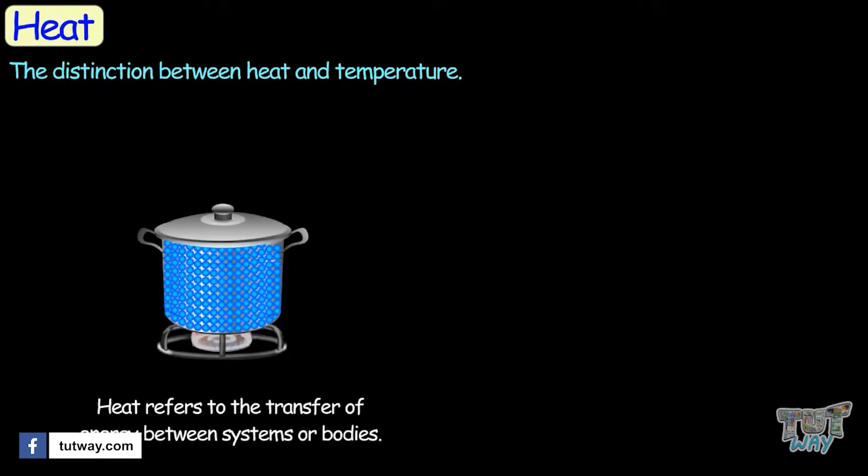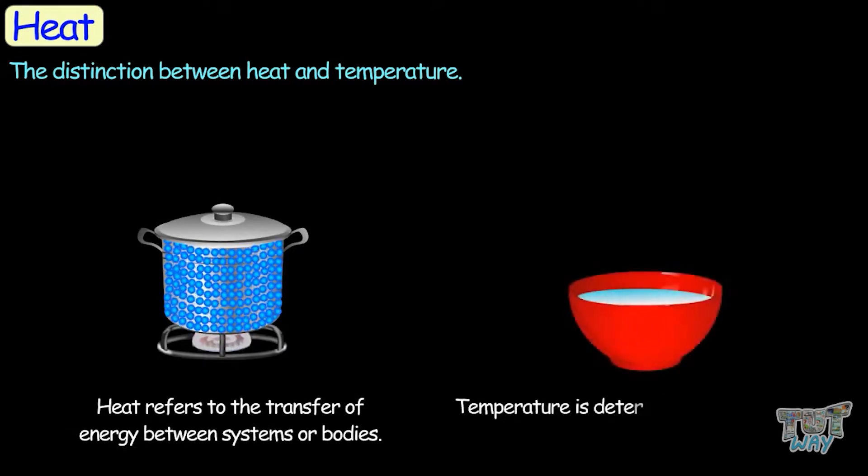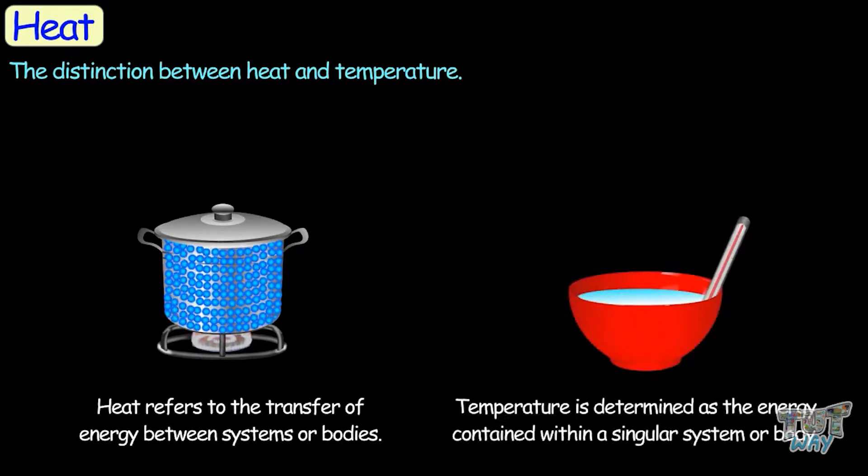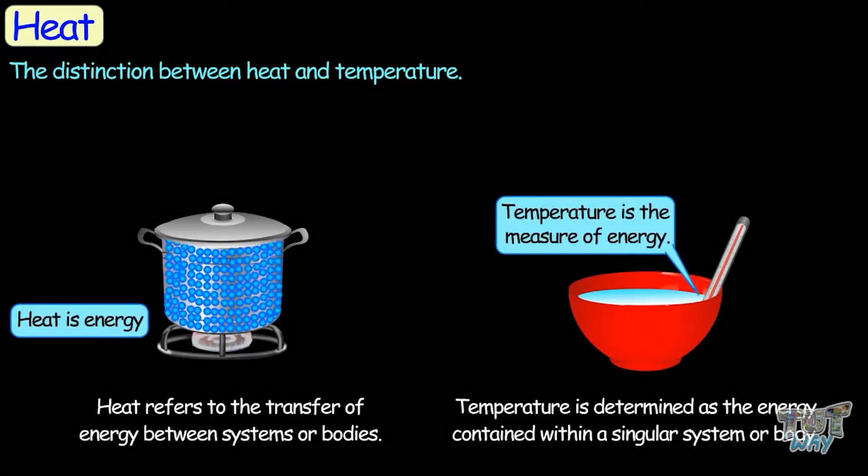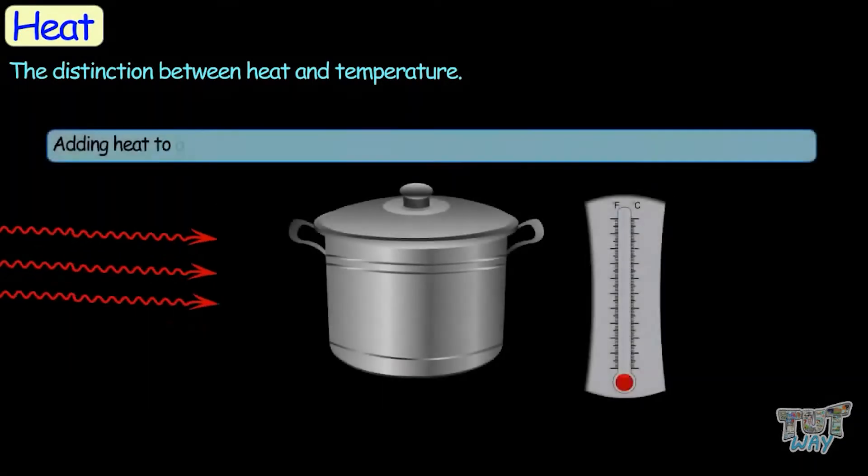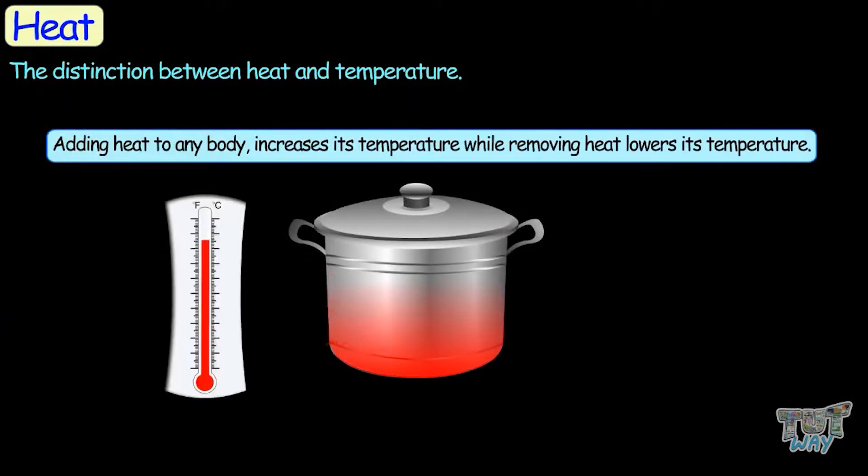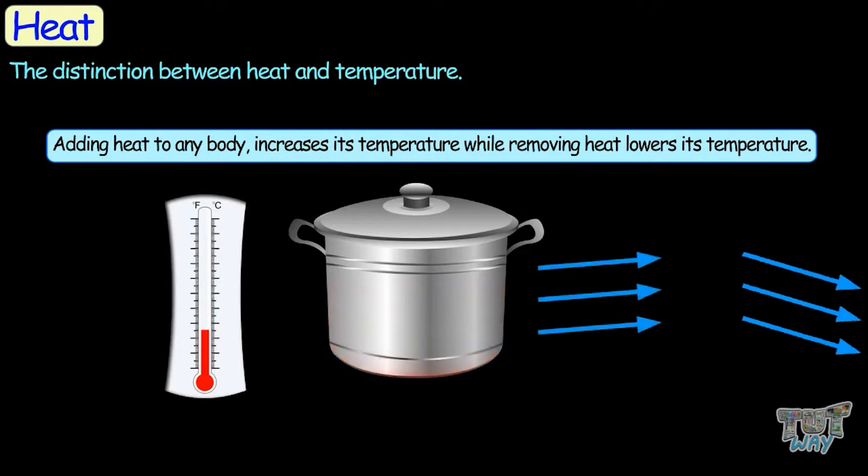Now let's learn the distinction between heat and temperature. Heat refers to the transfer of energy between systems or bodies, whereas temperature is determined by the energy contained within a singular system or body. In other words, heat is energy while temperature is a measure of that energy. Adding heat to any body increases its temperature, while removing heat from any body lowers its temperature.